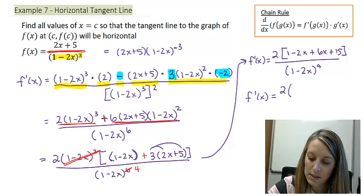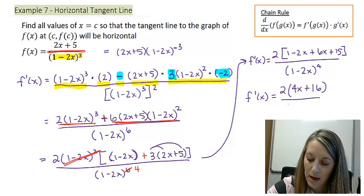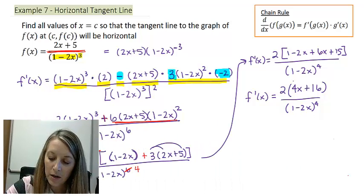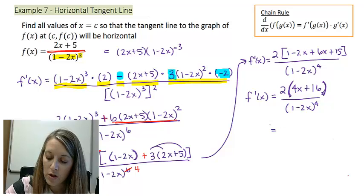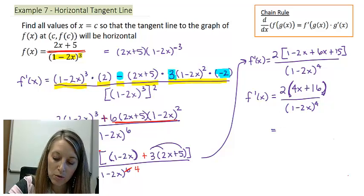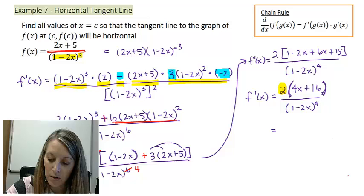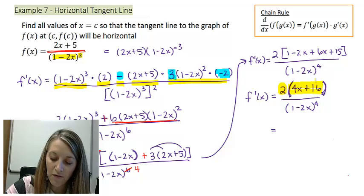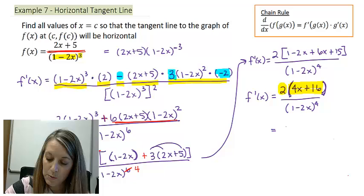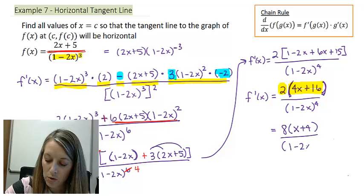Combining my terms in the numerator, 6x minus 2x gives me 4x. And 1 plus 15 gives me 16. And if we choose to, we can actually factor that a little bit farther. I notice in my leftover parentheses, I have another common factor of 4. So let me pull that out. And I am going to multiply it by this 2 here. So I take 2 times my common factor of 4 here, which gives me 8. And then that gives me (x + 4). And that is over my (1 - 2x) to the fourth.